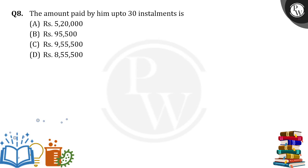Here is question number 1: The amount paid by him up to 30 installments. So 30 installments means n is equal to 30. Right, so how much he paid until 30 installments we have to find, by using A equals 13,000 and d equals 1,300.